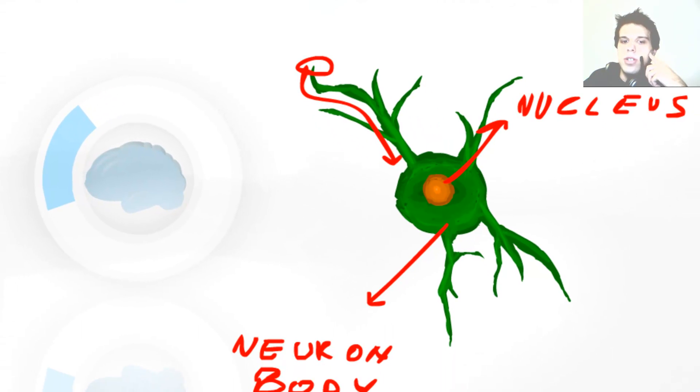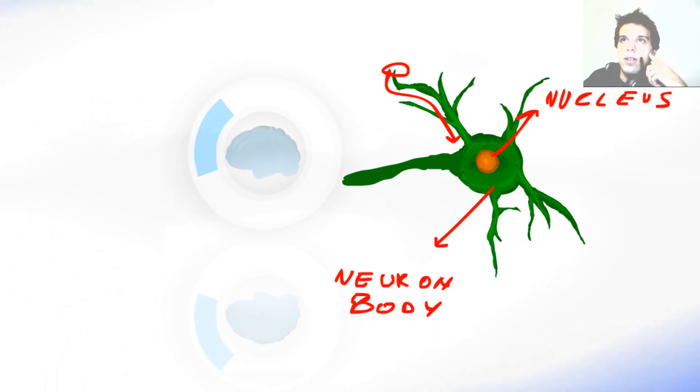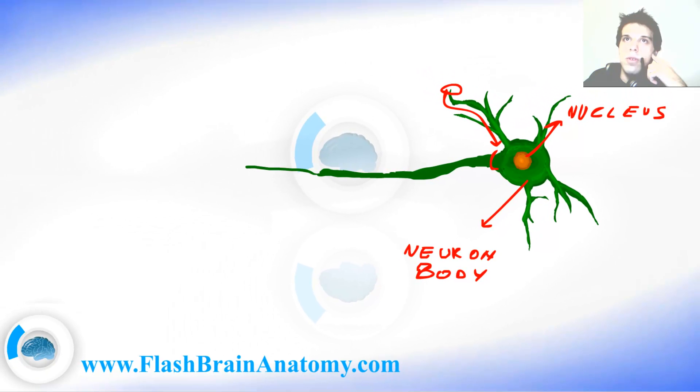Another protoplasm extension, an axon, starts here with a thick origin. Then it gets thinner and continues on with approximately the same radius till its end.